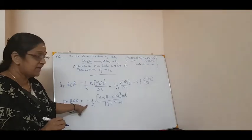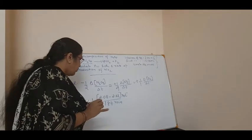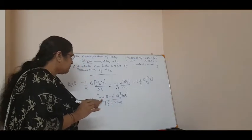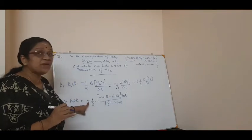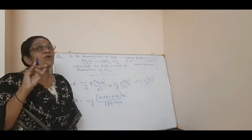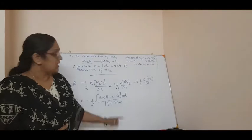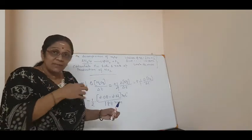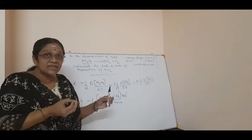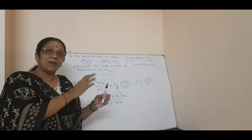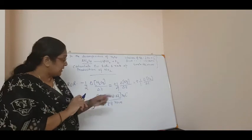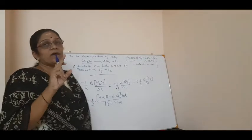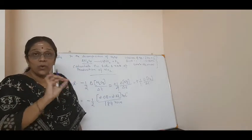On calculating this, 2.08 minus 2.33 gives a negative value since the final is lower and the initial is higher. But here there is already a minus sign. So that minus and minus will become plus — that is why in the last class I told you the rate of reaction will always be positive. As time goes on, the concentration of the reactant decreases, so a lesser value minus a higher value gives a minus, and the rate of disappearance sign is also minus, making the result positive.